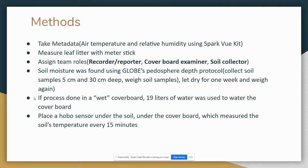Soil moisture was found using GLOBE's Pedosphere Z protocol, where we would collect soil samples at 5 cm deep and 30 cm deep. Then we would weigh the soil samples, let them dry for one week, weigh them again, and subtract the difference. If the process was done on a wet coverboard, about 19 liters of water was used to water around and inside the coverboard. After that, we would place a HOBO sensor under the soil, which measured the soil's temperature periodically every 15 minutes.